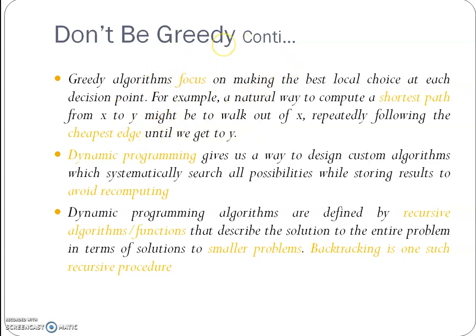Dynamic programming is also used to design custom algorithms that systematically search all possibilities to avoid redundant computation. Dynamic programming also defines a recursive algorithm or function that describes the solution to the entire problem in terms of solutions to smaller sub-problems, where backtracking — as a recursive procedure — is used to represent dynamic programming.